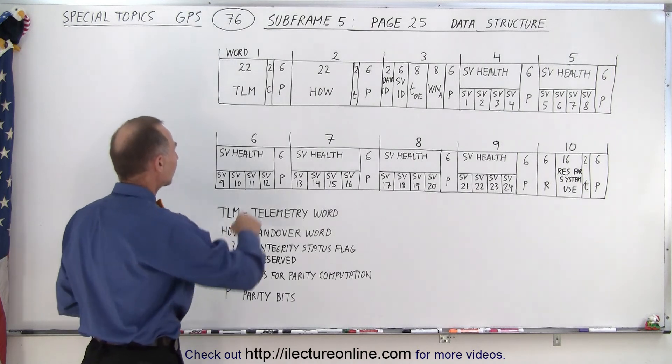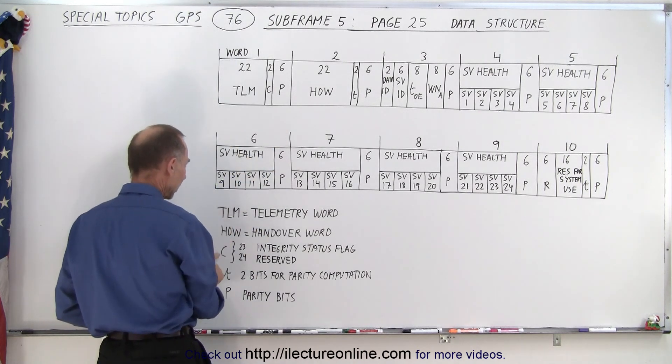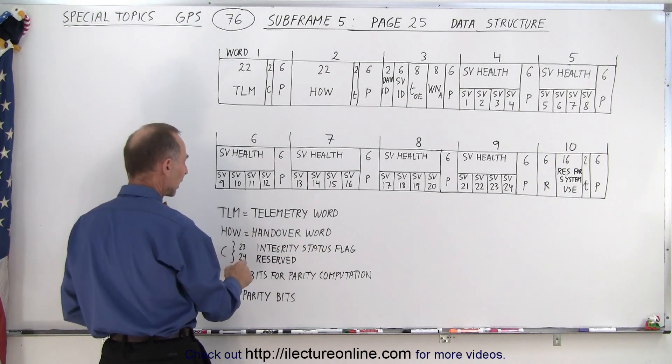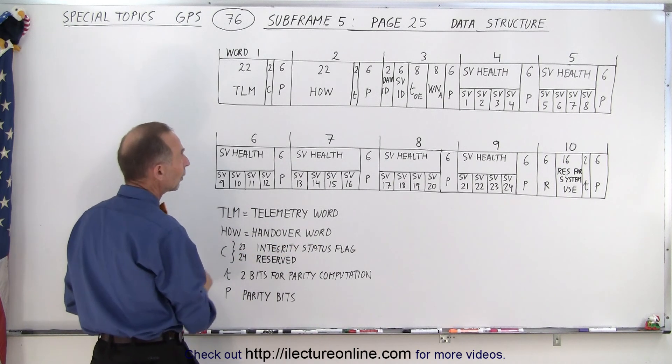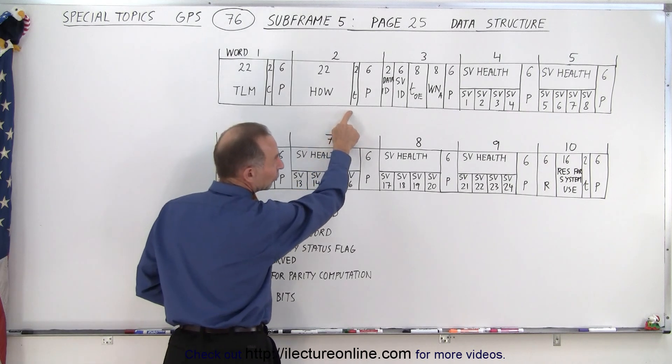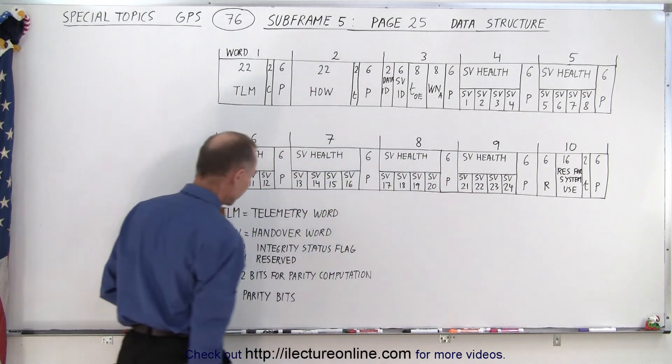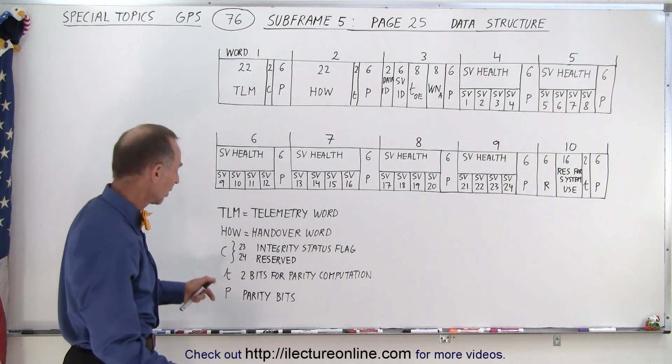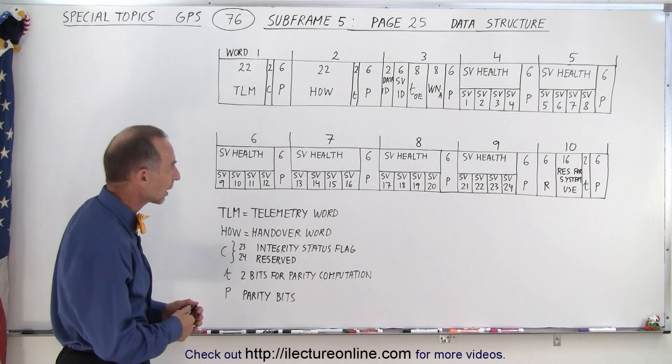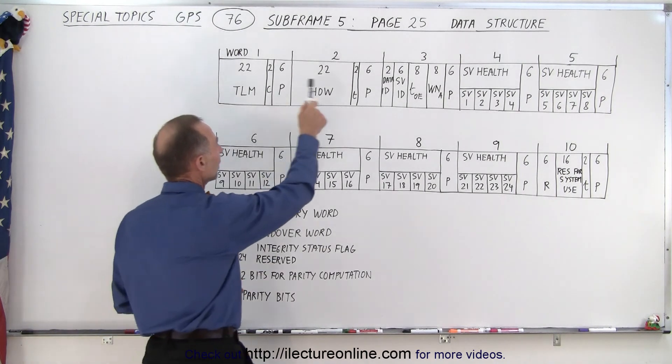We do have some bits. Here we have the two bits identified as C, bits 23 and 24. 23 is an integrity status flag and 24 is reserved. When you see a T there, we have two bits over here, we have two bits in word 10 there. They're parity bits, used for parity computation as well as the last six bits in each word.